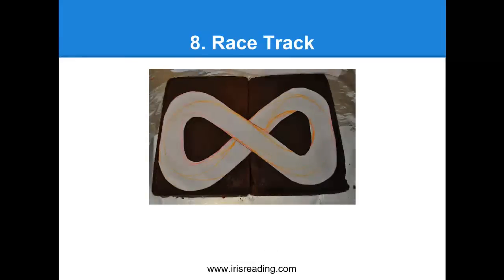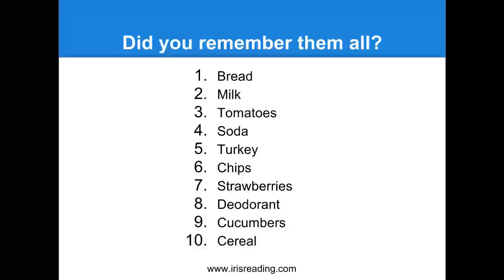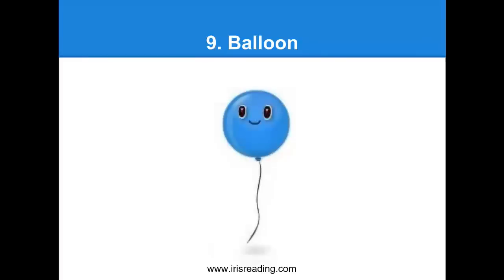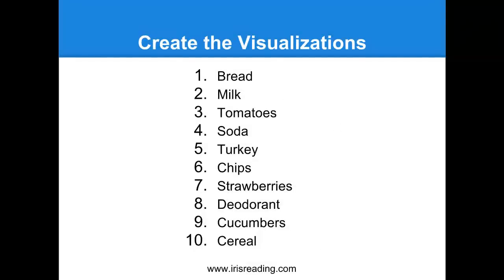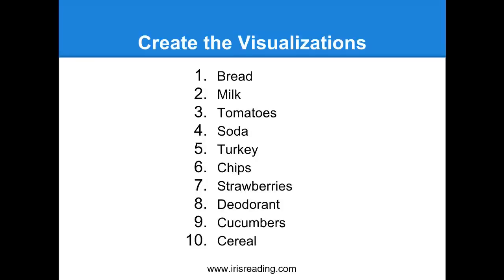Nine is cucumbers. We take our visual image of nine, which was a balloon, and associate it visually to cucumbers. Let's picture not just the balloon on screen but a bigger balloon — like a blimp. Picture the Goodyear blimp, but instead of a regular blimp, it's going to be a giant cucumber. That's what we need to remember. Nine reminds us of a balloon — not just any balloon, a giant blimp — and it is a cucumber blimp floating across the sky. The images do not have to make sense; it's actually better if they don't.